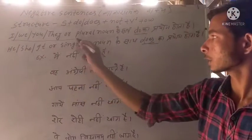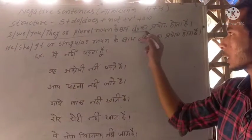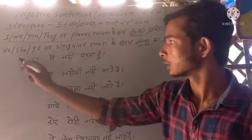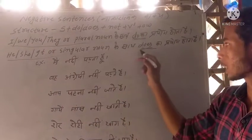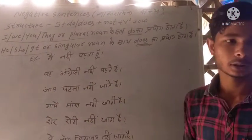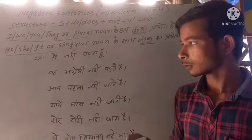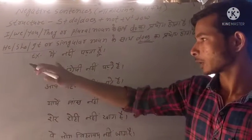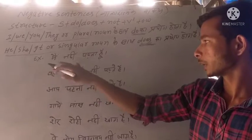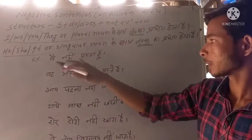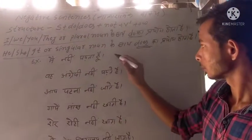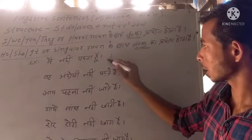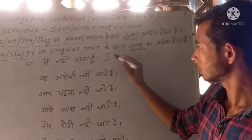What do you use here? Look at the example: I do not study. What auxiliary do you use? 'Do'. Yes, 'do' — because 'I' is the subject.